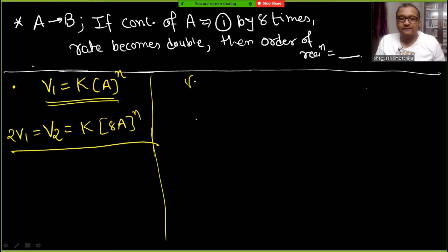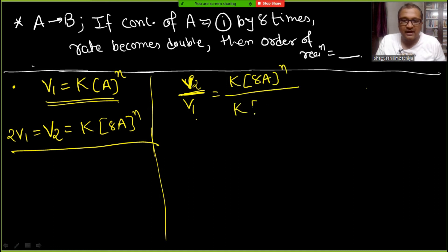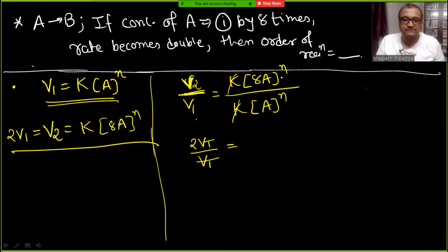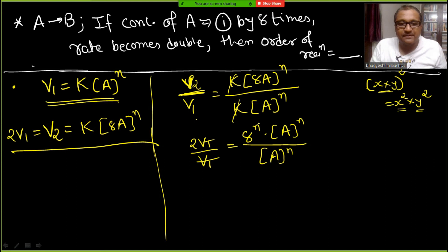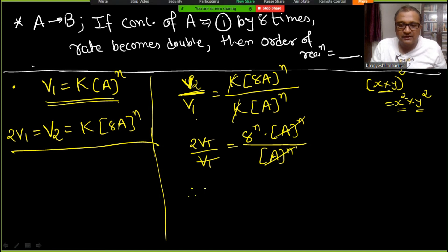Taking V2/V1: V2 = K × (8A)^N and V2 = 2V1. So 2V1/V1 = K×(8A)^N / (K×A^N). K cancels, A^N cancels: 2 = 8^N. Using (XY)^n = X^n × Y^n rule to expand.